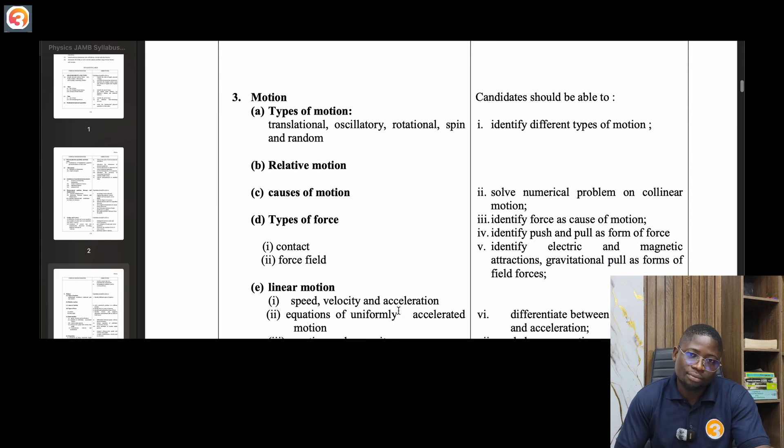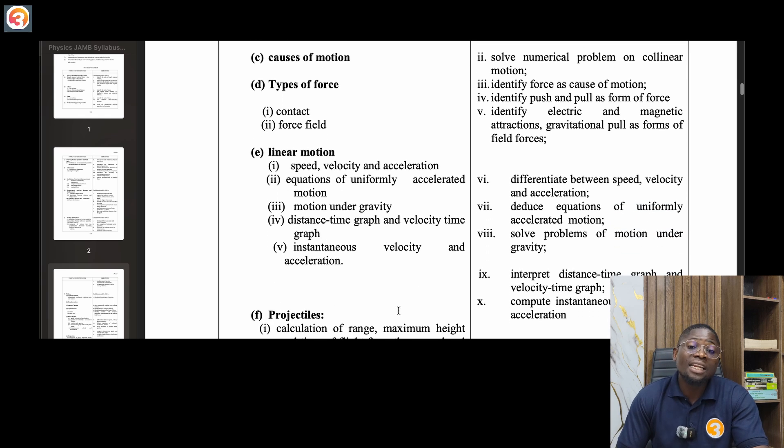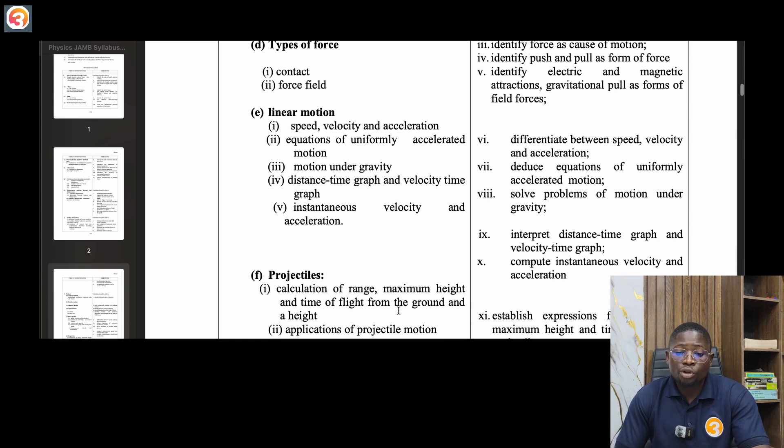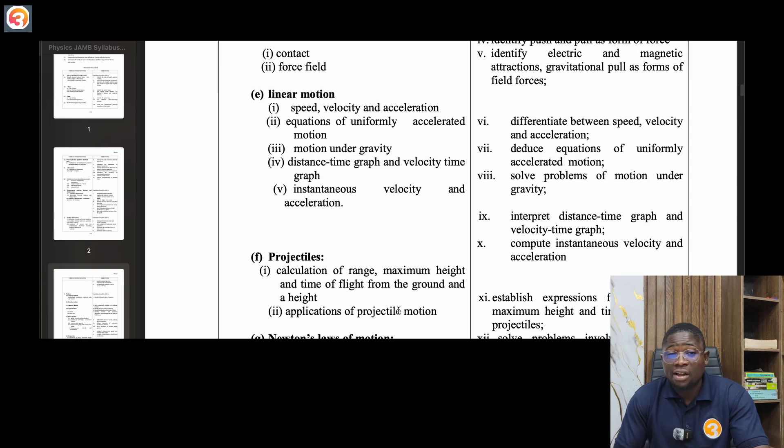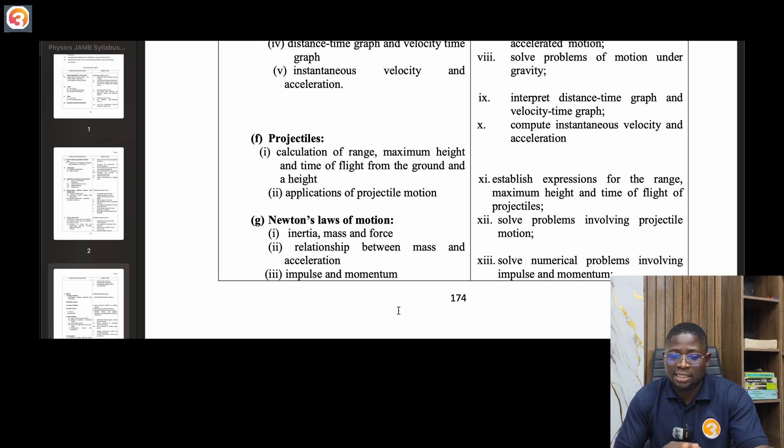Number three, motion. Talk about types of motion: translational, oscillatory, rotational, spin, random. Relative motion, causes of motion, types of force. In linear motion: speed, velocity and acceleration, equations of uniformly accelerated motion, motion under gravity, distance-time graph and velocity-time graph, instantaneous velocity and acceleration.